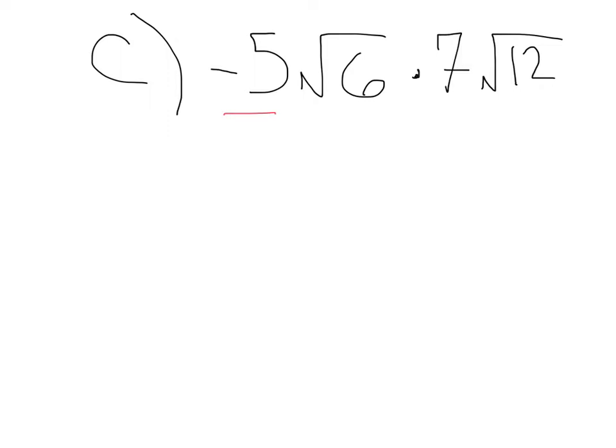I have negative 5 times 7. That's going to give me negative 35. Let's move inside the square roots. Here we have square root of 6 times square root of 12. That's going to be the square root of 72.